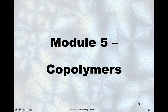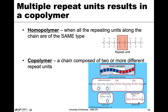In this module we're going to extend our conversation on polymers and talk about copolymers. Up to this point we've been talking about what we call homopolymers, where all of the repeat units are the same type — so polyethylene has carbon-carbon with four hydrogens, everything is the same.